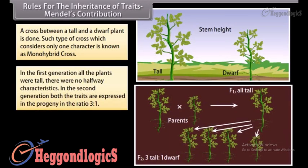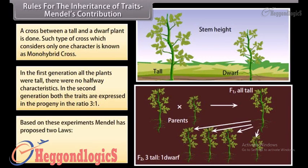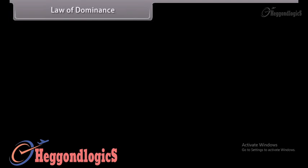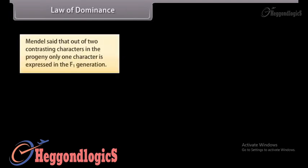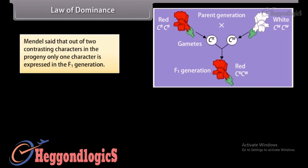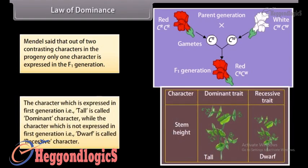In the first generation, all the plants were tall — there were no halfway characteristics. In the second generation, both traits were expressed in a progeny ratio of 3:1. Based on these experiments, Mendel proposed two laws: the law of dominance and the law of segregation. The law of dominance states that out of two contrasting characters, only one character is expressed in the F1 generation. The character expressed (tall) is called the dominant character, while the unexpressed character (dwarf) is called the recessive character.